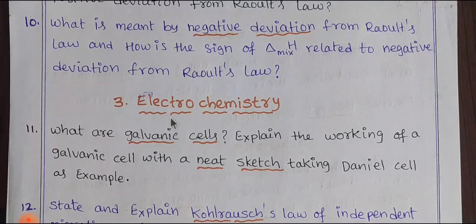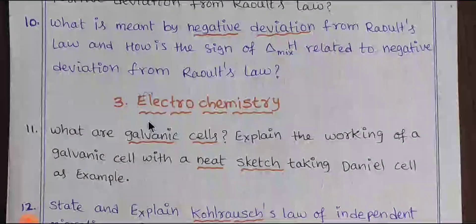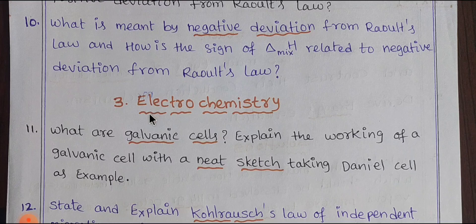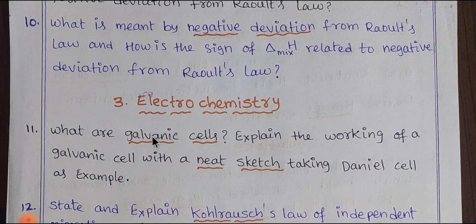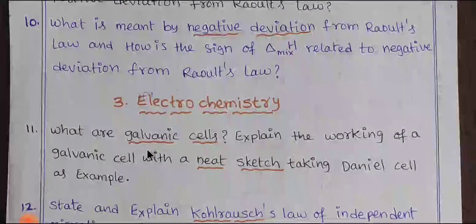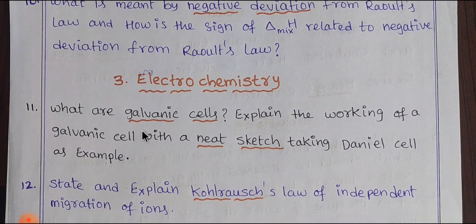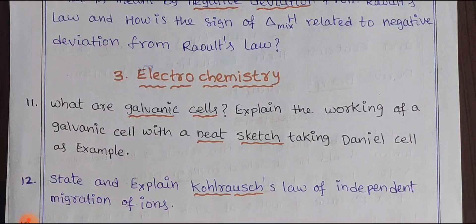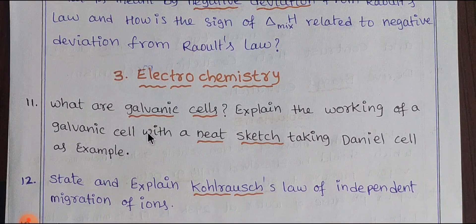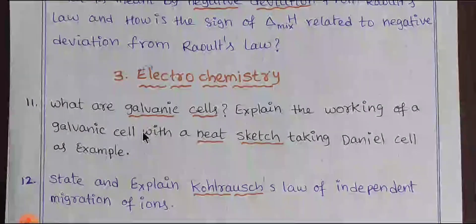The next lesson is Electrochemistry. In Electrochemistry and Chemical Kinetics, you have 4 marks plus 4 marks. In the general method, there are a number of 2-mark questions. If you work on Electrochemistry and Chemical Kinetics, you will do 4 marks in Electrochemistry and 4 marks in Chemical Kinetics.